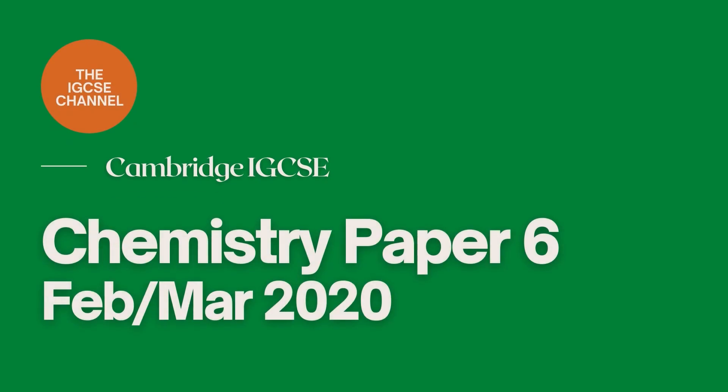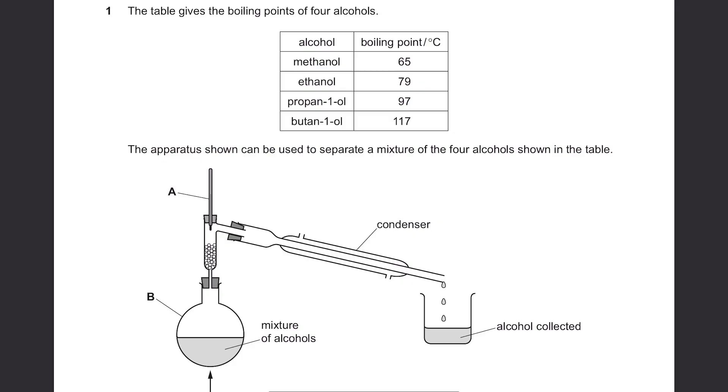Hi guys, this is Cambridge IGCSE Chemistry February March 2020, Paper 6. Question 1.